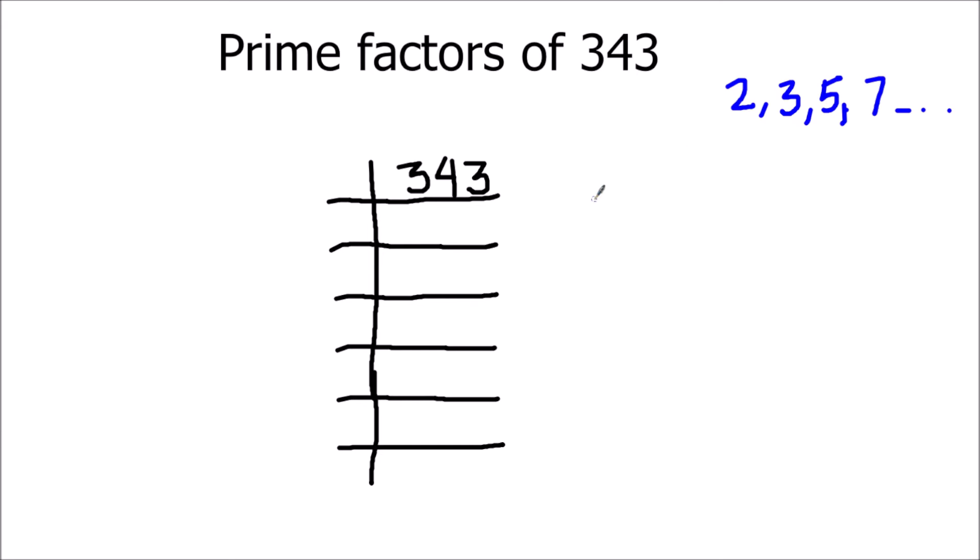Let's try number 3. 343 is also not fully divisible by number 3 and number 5. So let's try number 7 and divide 343 by number 7.